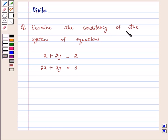Examine the consistency of the system of equations: x plus 2y equals 2, 2x plus 3y equals 3.